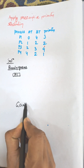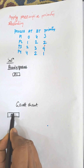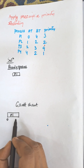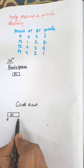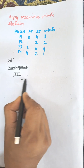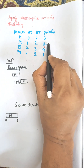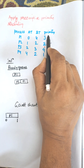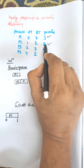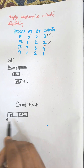P1 will execute first up to the arrival of the next process, which is at time 1, when P2 arrives. The priority of P2 is greater than the priority of P1, meaning P2's priority is better than P1's priority. So P2 will be selected for execution and P1 is preempted.